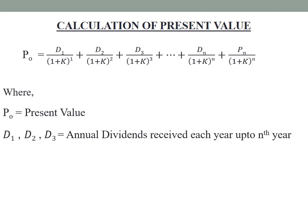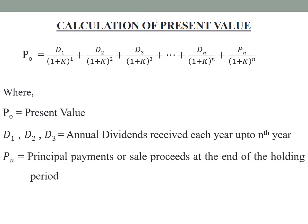D1, D2, D3 to Dn are the annual dividends received each year. Pn is the sale proceeds — the selling price — at the end of the holding period. So when we hold the share for n years, Pn is the price at which we sell. In a 3-year holding period Pn would be P3, and in a 4-year period it would be P4. K is the discount rate, i.e., the expected rate of return, used to calculate the intrinsic value under multiple holding period.